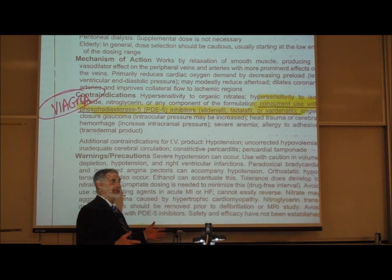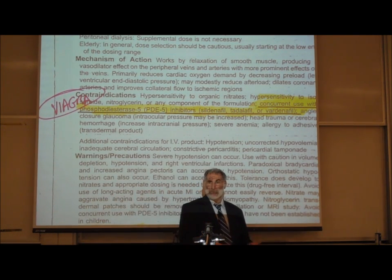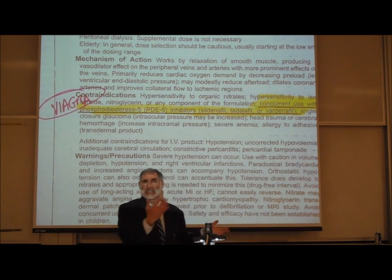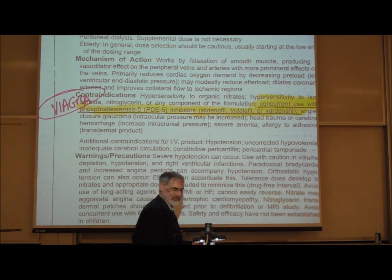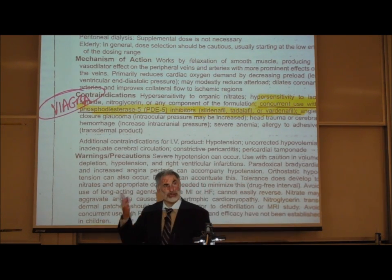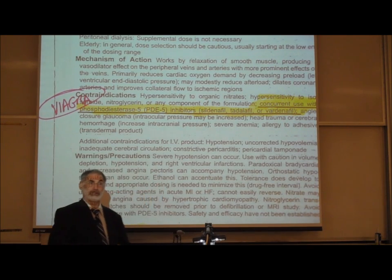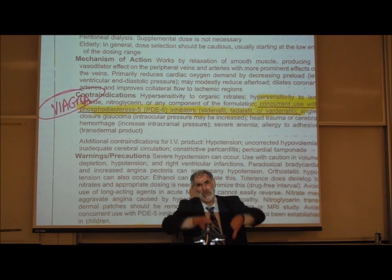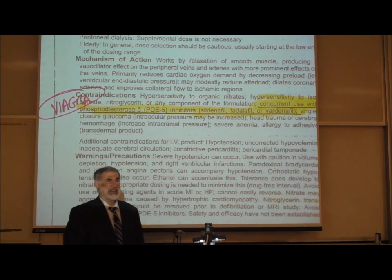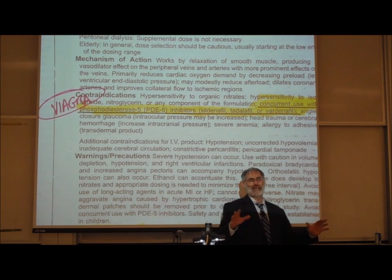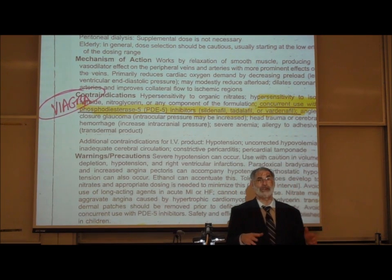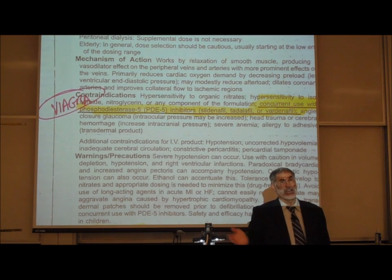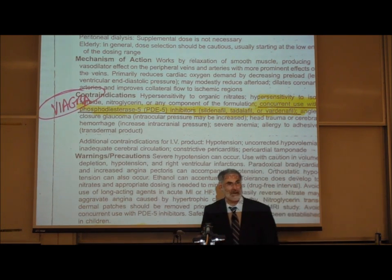Viagra drugs work as vasodilators — they dilate blood vessels, especially those in the penis, increasing blood flow for erection. So if somebody is on nitroglycerin for their angina and they take Viagra, which also dilates vessels, vasodilation lowers blood pressure. If they're on a beta blocker, the big concern is the drop in blood pressure. If they're not on a beta blocker, the cardiovascular reflex center is going to trigger a reflex tachycardia.